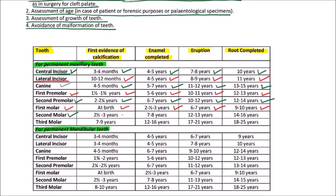For the maxillary second molar, the first evidence of calcification occurs between 2.5 to 3 years, enamel is completed by 7 to 8 years, eruption occurs between 12 to 13 years, and the root is completed by 14 to 16 years.